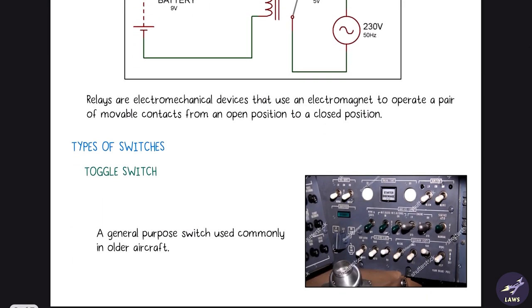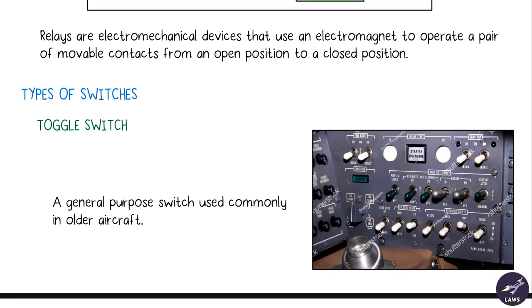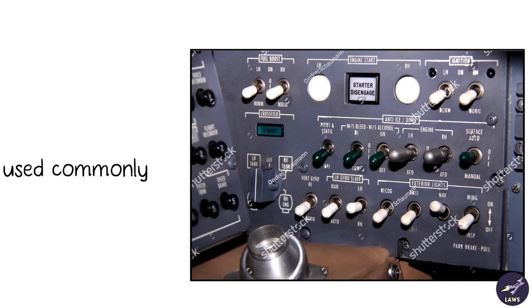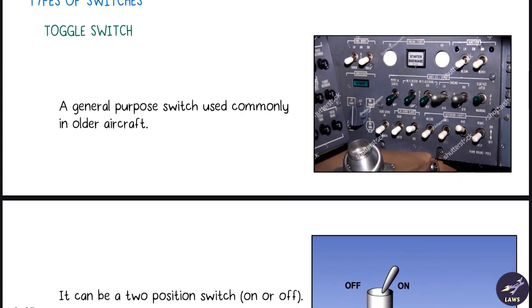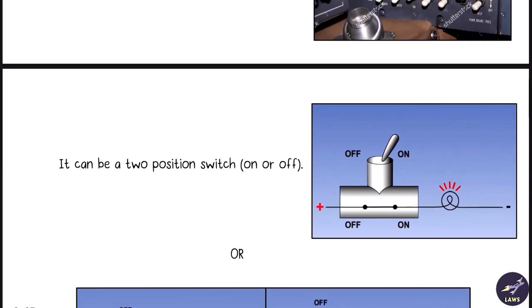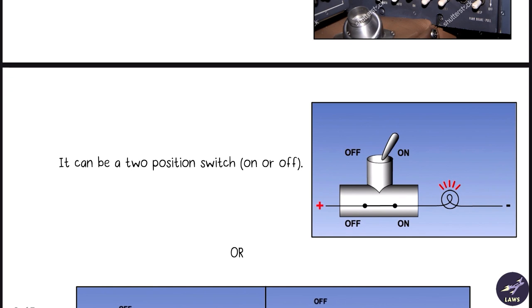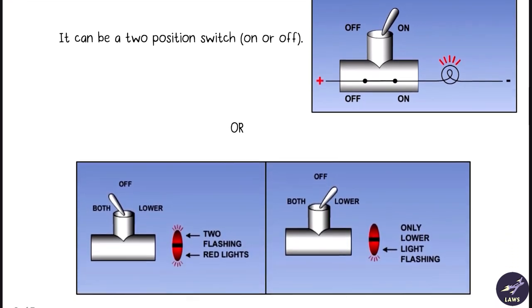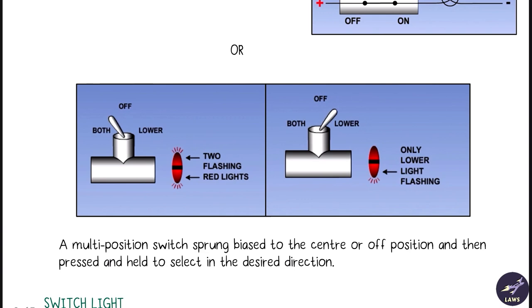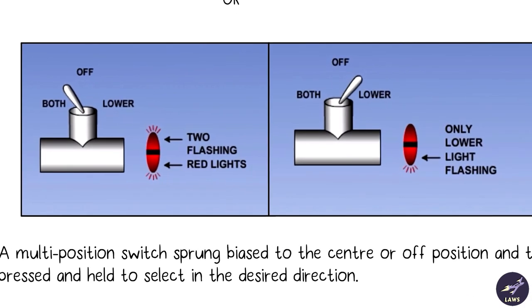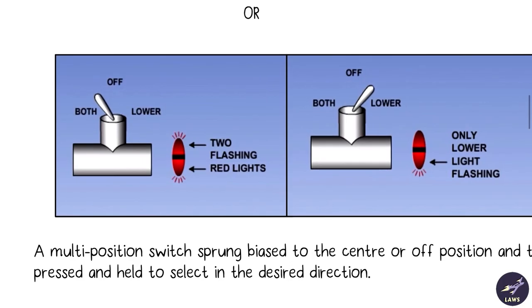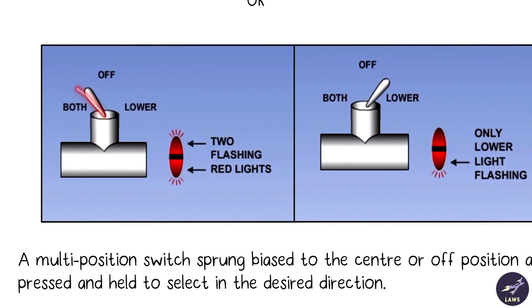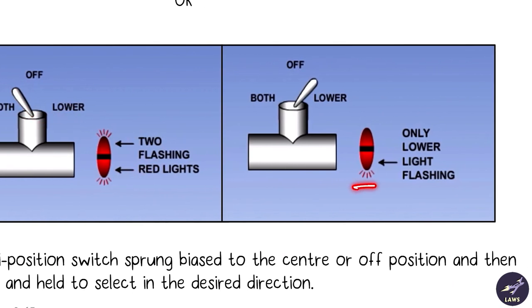Now we'll look at types of switches. First is toggle switch, used in older aircraft - a general purpose switch used commonly in older aircraft. It can be a two position switch which is on or off, or a three position switch. In this case, they've taken an example of the anti-collision beacon lights. If it is both, then both the beacon lights will be on. If it is lower, then only the lower one will be on.